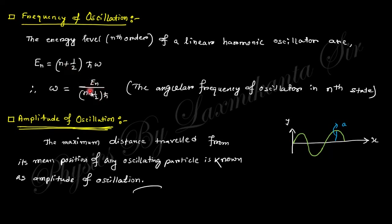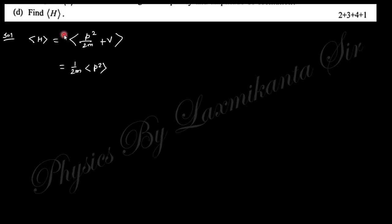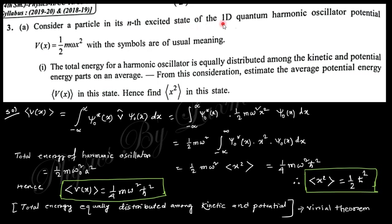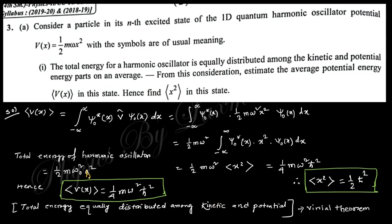Next question: for a particle in an excited state of the 1D quantum harmonic oscillator, is the total energy equally distributed between kinetic and potential energy? Yes — by the virial theorem the average kinetic and potential energies are equal, each being half the total energy. So the average energy for each is half of the total Eₙ = (n+1/2)ℏω.